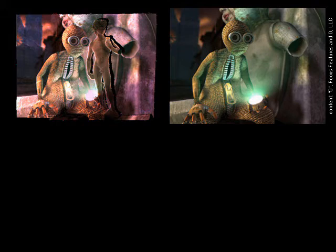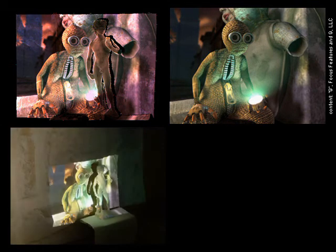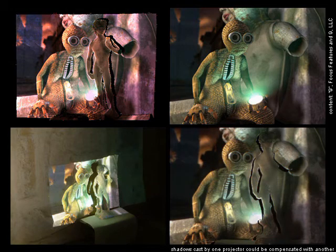Performing the radiometric compensation for an input image, as seen on the right, allows a compensation image to be synthesized as depicted on the left. An optimal solution is provided by iterative non-negative least squares approaches, since projectors cannot display negative light. Projecting the compensation image onto the scene results in a corrected view from the camera's perspective.